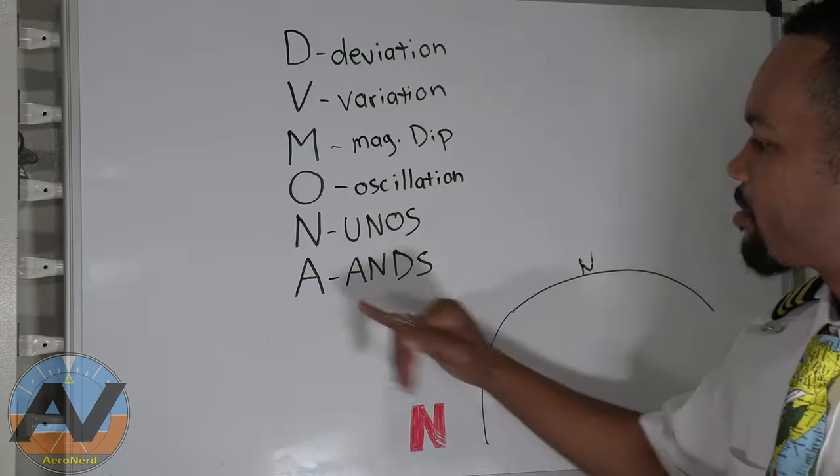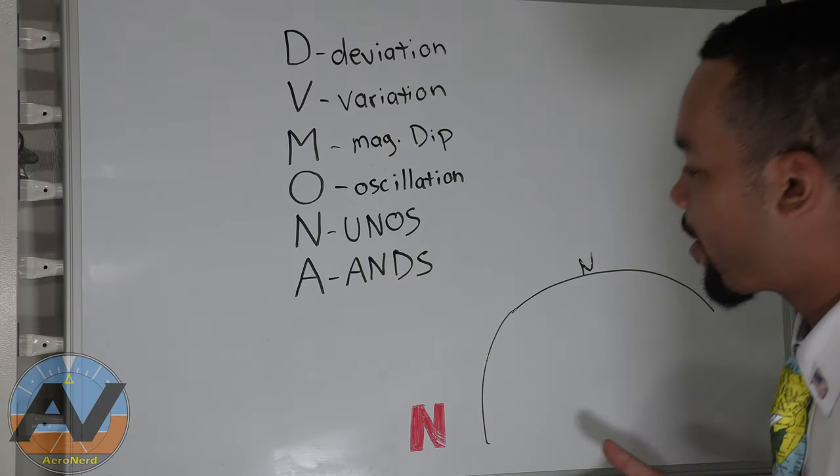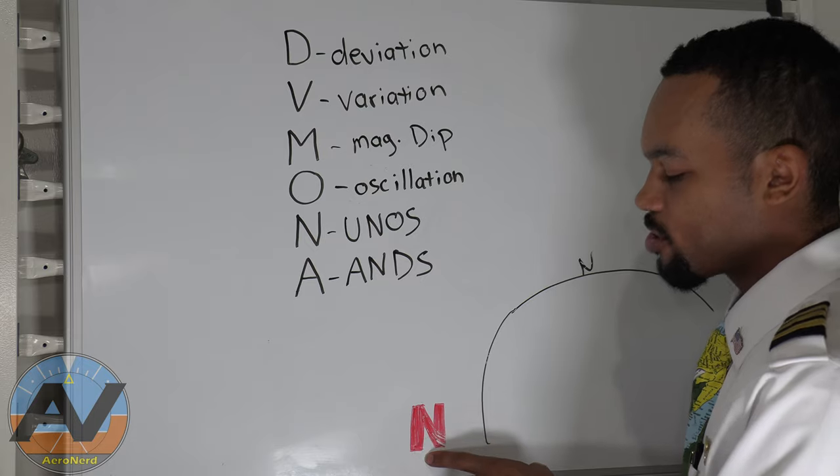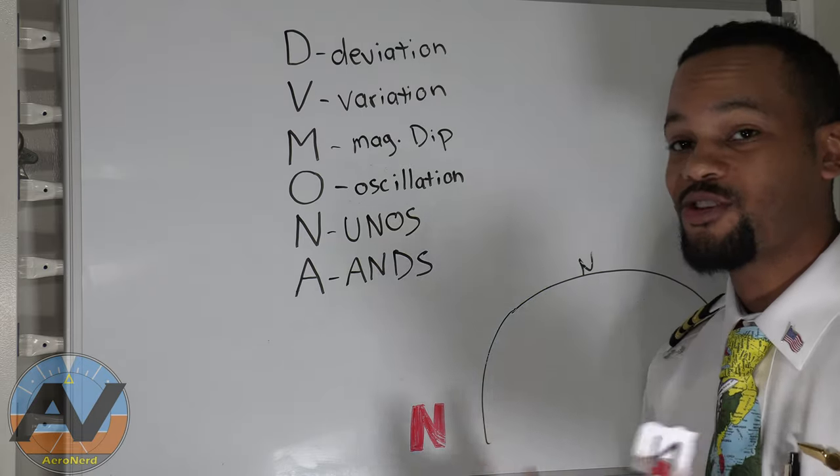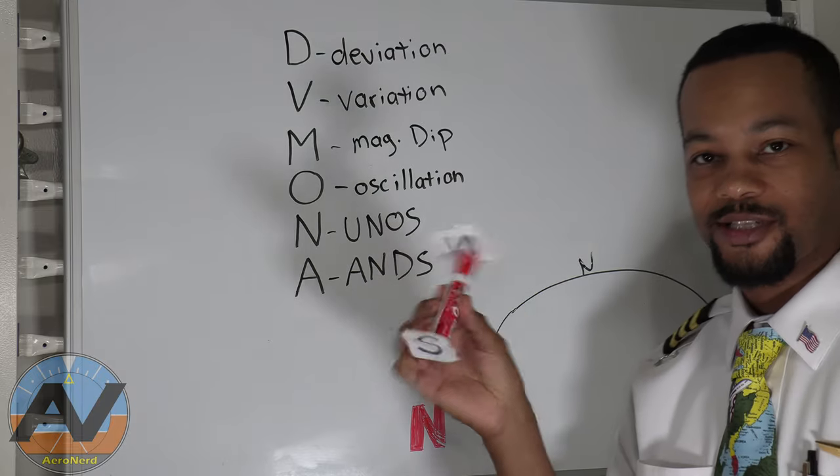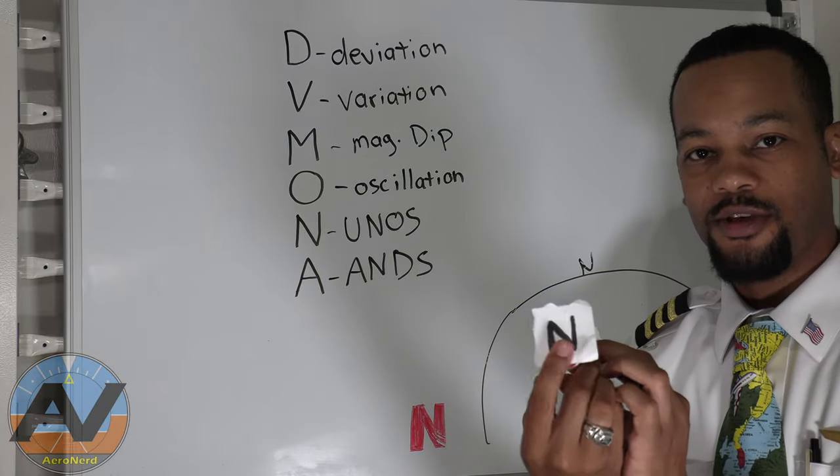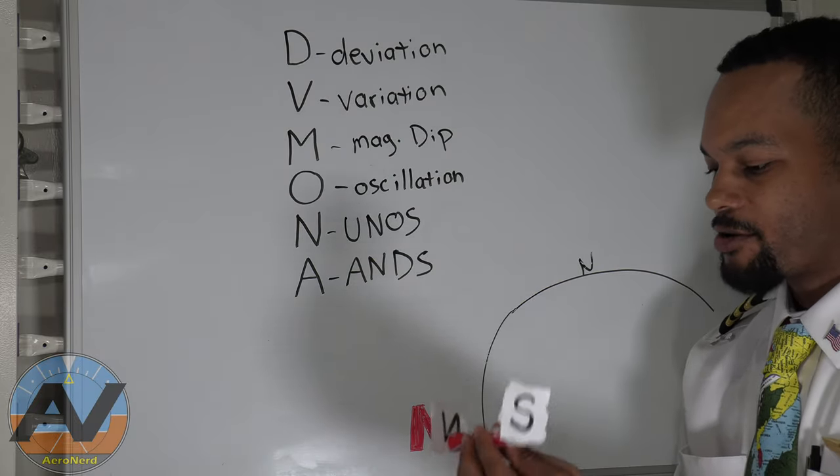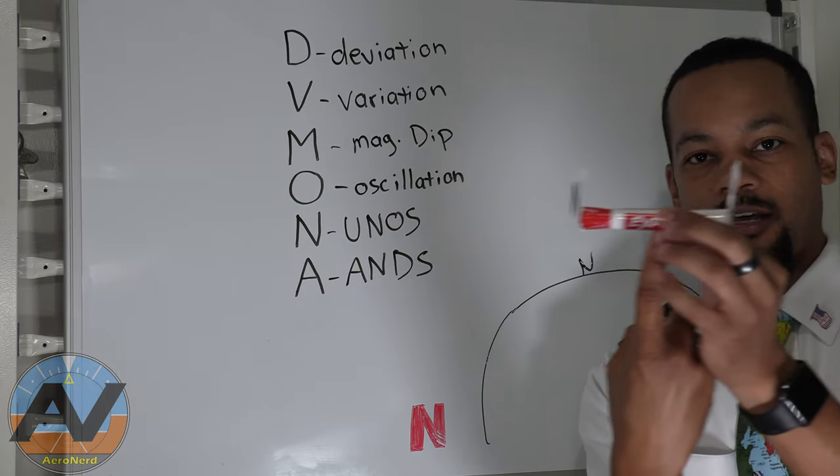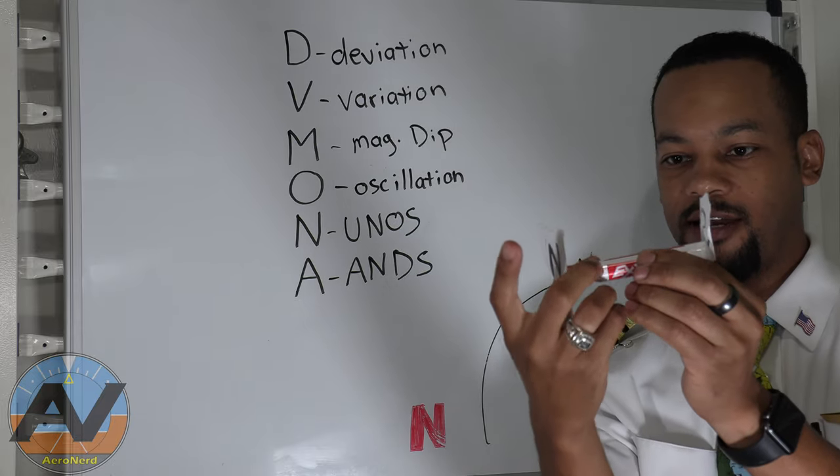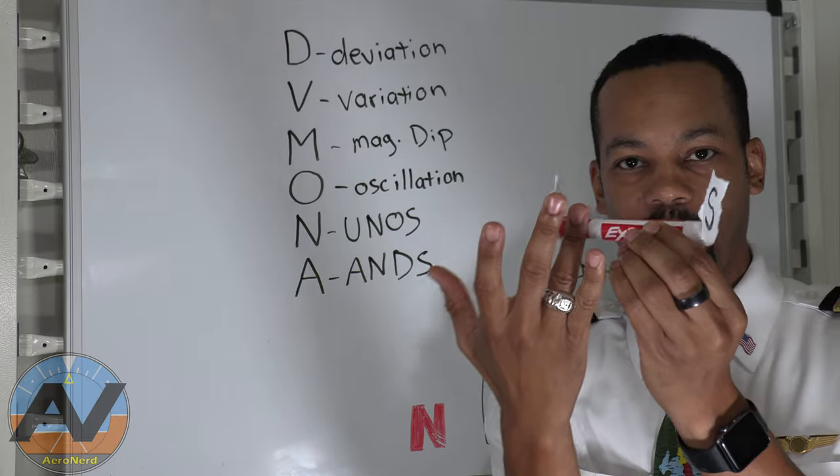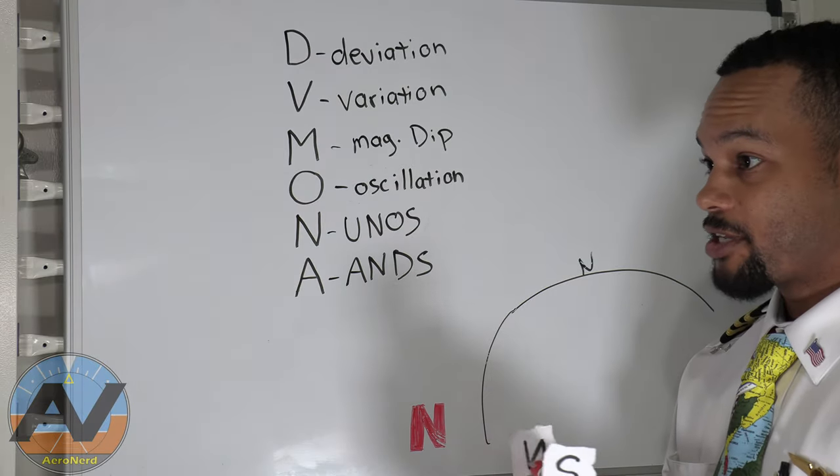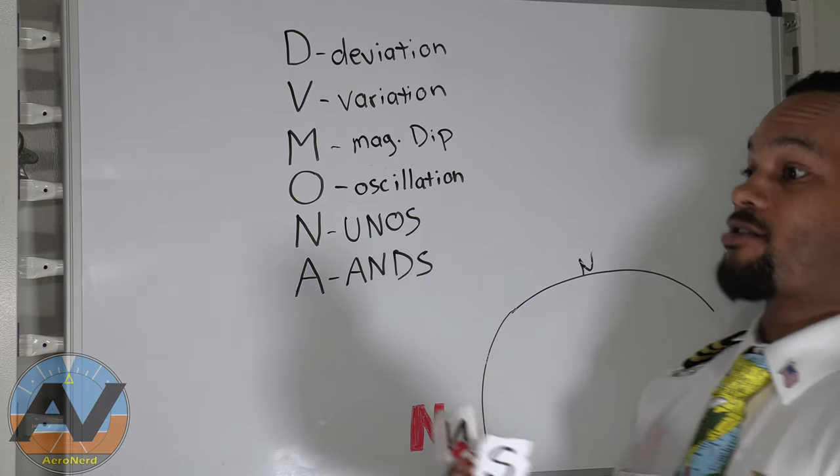Now we're going to talk about ANDS. Accelerate North, decelerate South. Now why? When you accelerate, the compass wants to go toward the North and when you decelerate, it goes to the South. Now the compass is always attracted to the North. Now this has to do with a little bit of inertia. So I got my silly little pen compass here. Now we have South on one end and we have North on the other. So this is where the magnet is and it's always attracted to North. So North and North. So if I were to put this on a balancing spindle in the middle, it would actually be heavier on one end because this is where the magnet is.